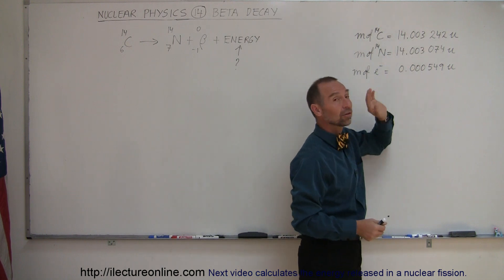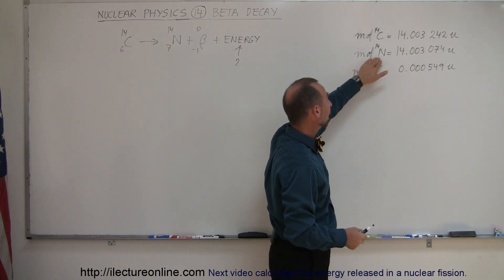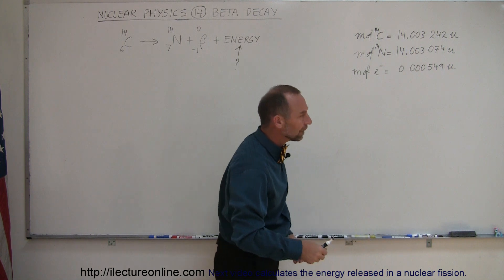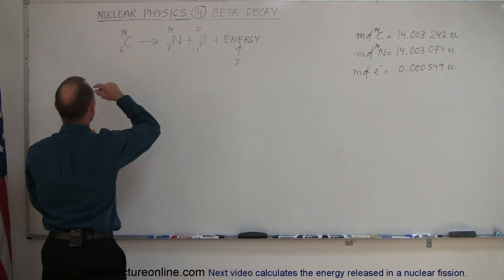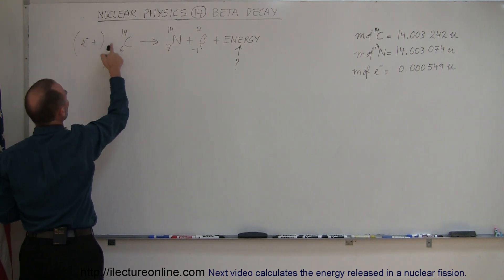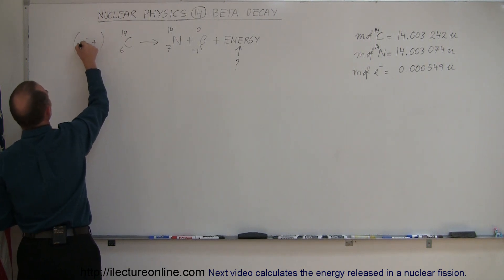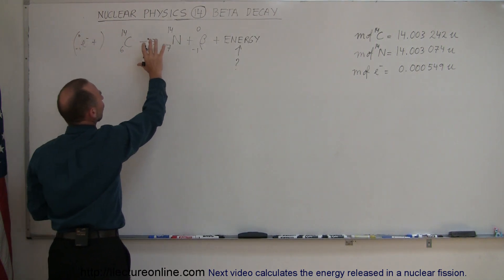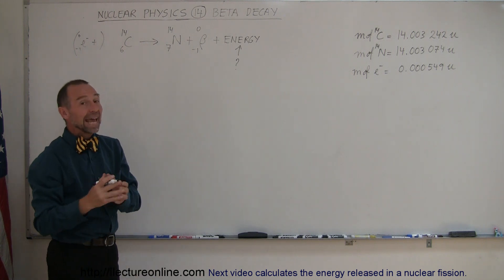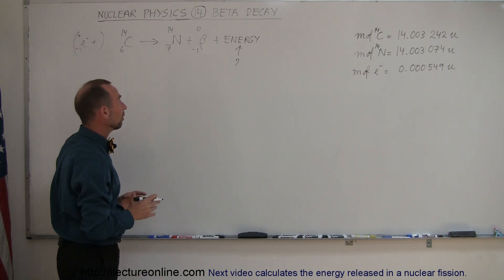For a carbon atom, since there are only six protons, there are only six electrons here. For the nitrogen atom, since there are seven protons, there are seven electrons there. So that extra electron comes from somewhere else, and we have to add that over here. The only difference is that this comes from the outside and goes to the electron orbits outside the nucleus and doesn't add mass to the nucleus itself.